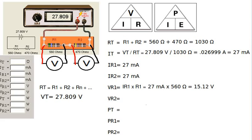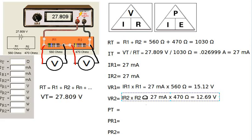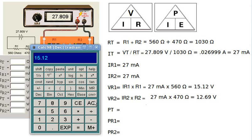For resistor 2, we do the same: the current through R2 multiplied by the resistance of R2 is 27 milliamps times 470 ohms, giving us 12.69 volts. Again, make sure to enter the value correctly into your calculator — use the exponent entry with the sign key set to negative 3, not the subtraction button.